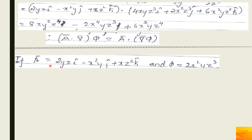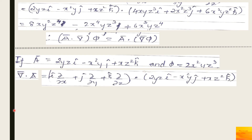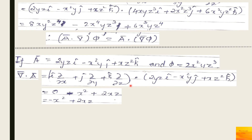Next problem: given the same ā and φ, find ∇·ā. Substituting the del operator and ā and opening brackets: the first term differentiated with respect to x is 0 (no x term), the second with respect to y gives −x², and the third with respect to z gives 2xz. So the final answer is −x² + 2xz.